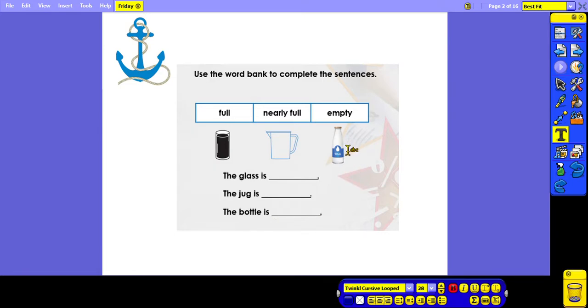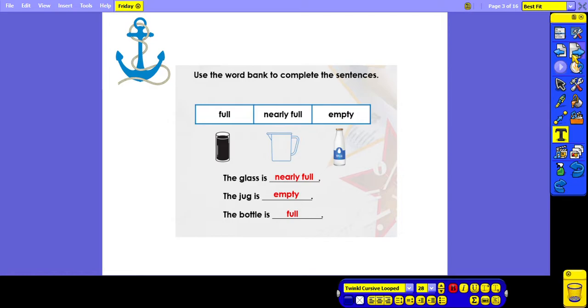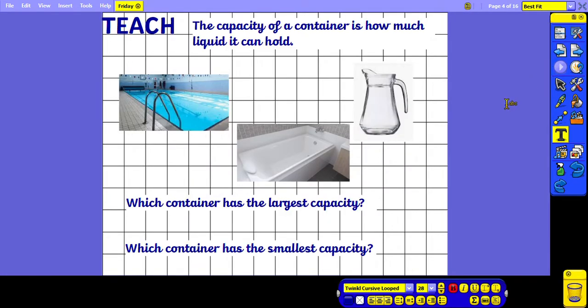So just a reminder of what capacity is - it is how much liquid a container can hold. So here we've got three different examples of containers which each have a different capacity, and we're being asked which container has the largest capacity and which has the smallest capacity. We've got a swimming pool, a bath, and a jug.